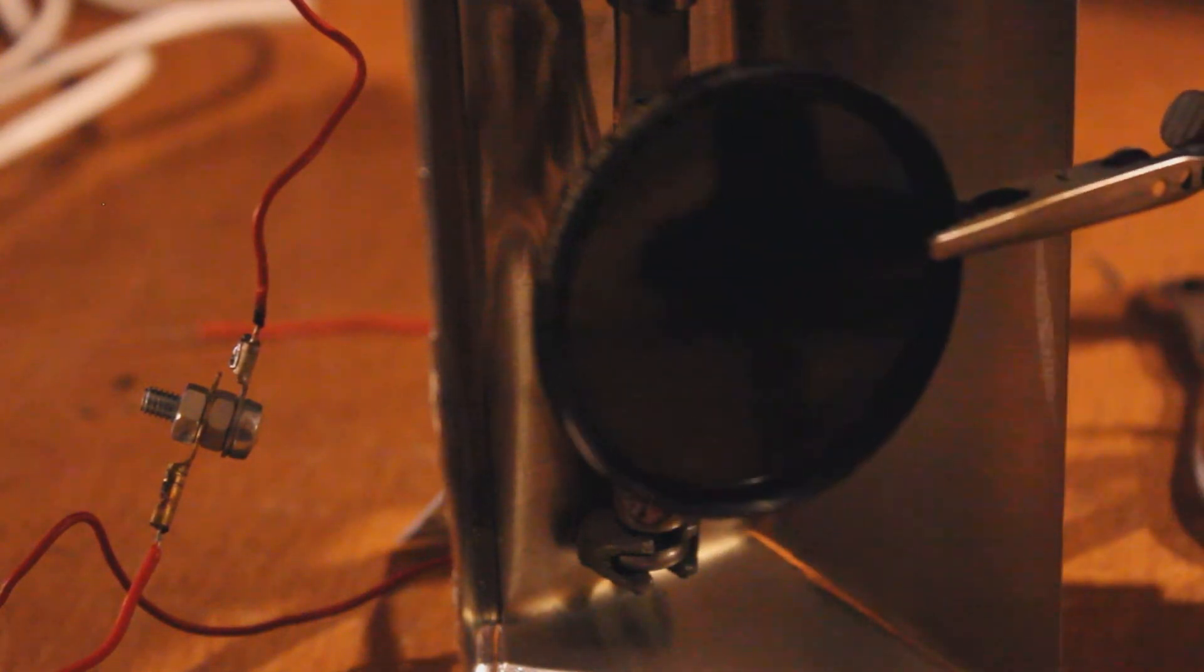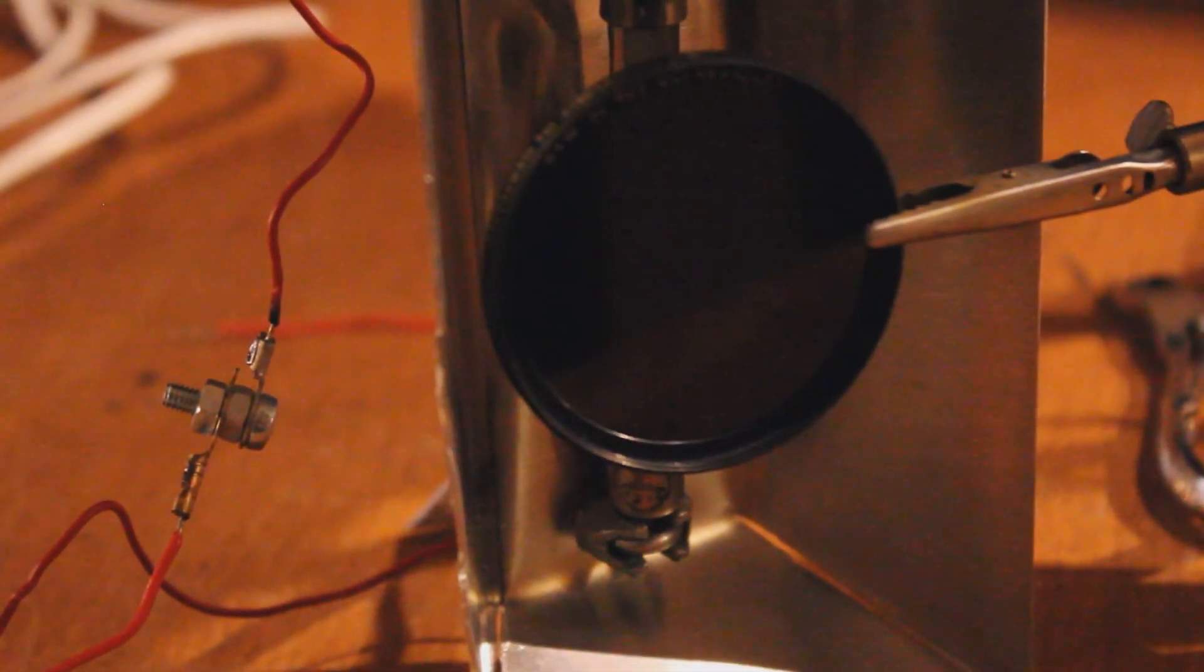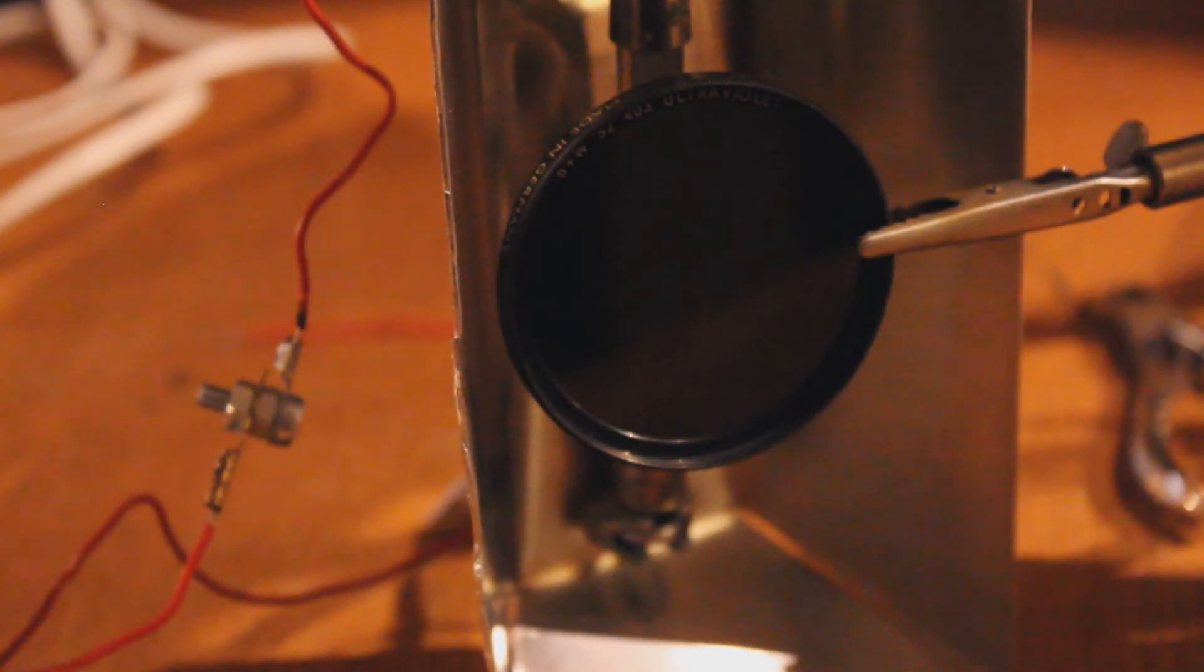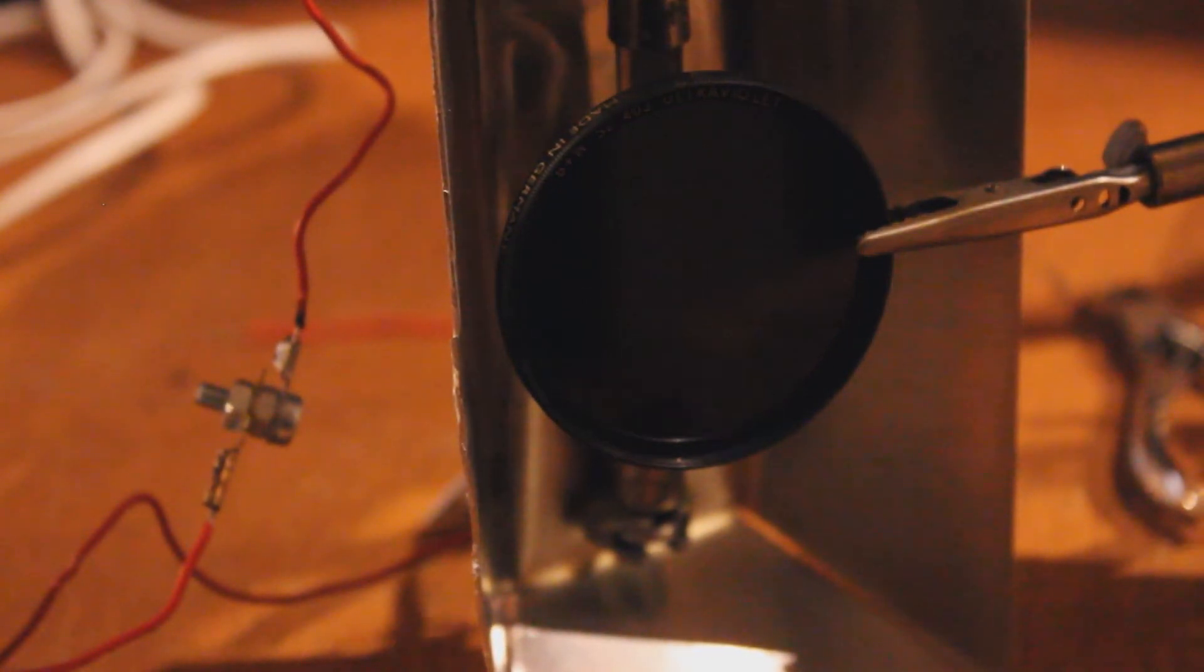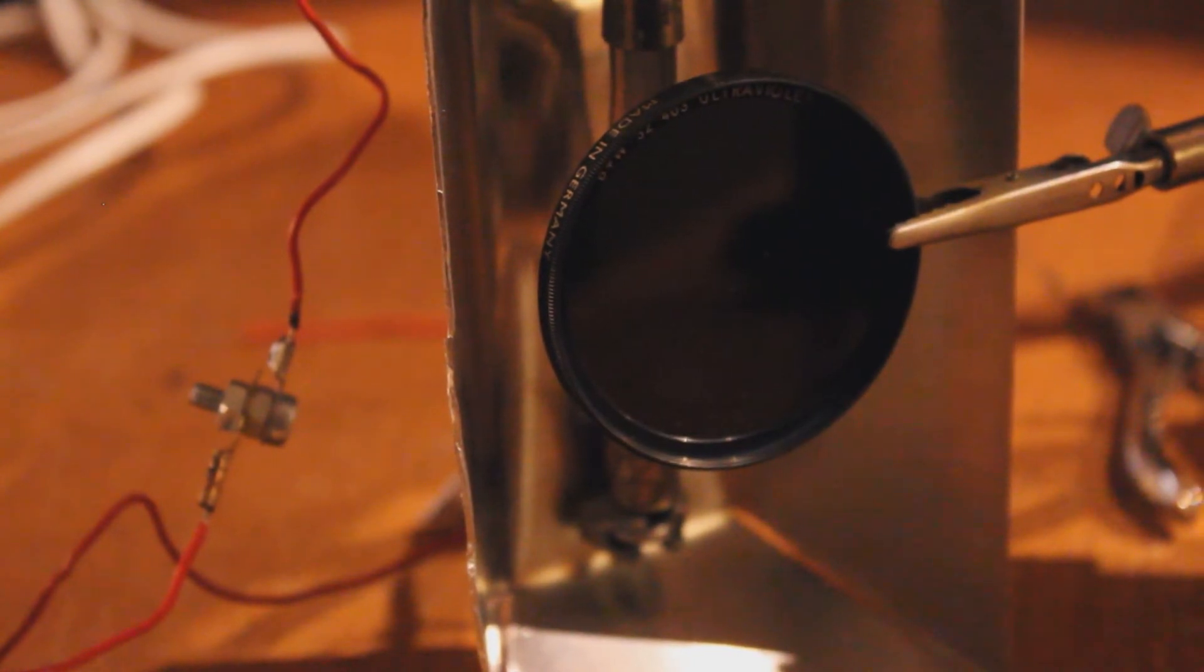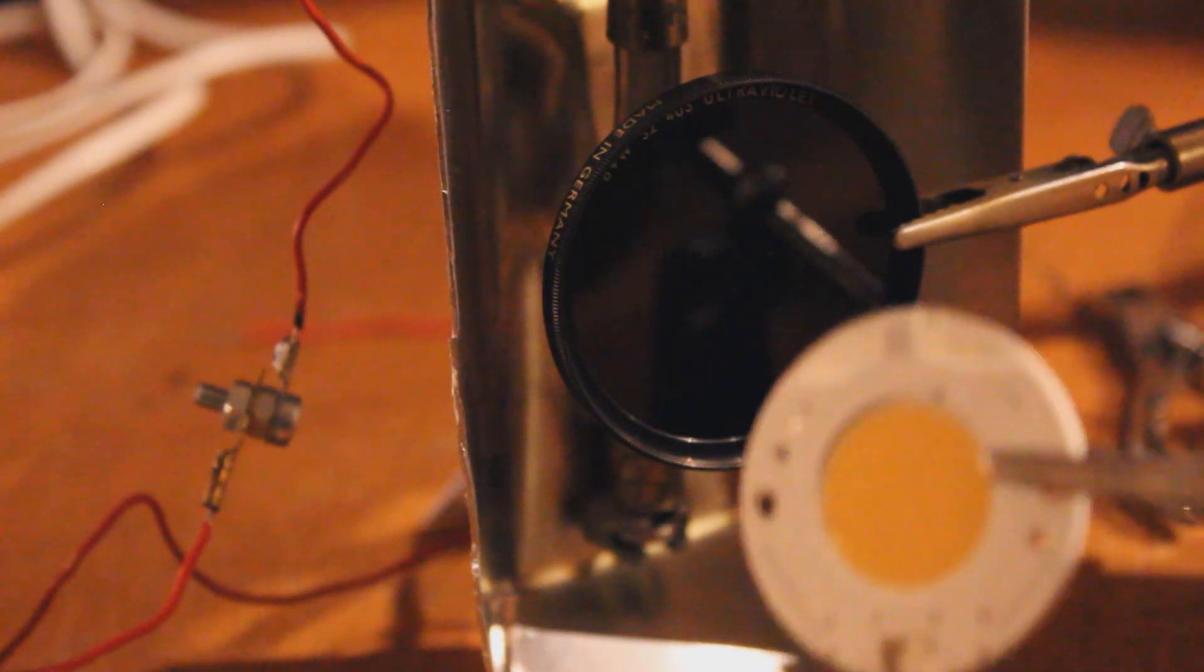Here is an ultraviolet pass filter. It's a piece of Wood's glass which will only allow the ultraviolet to get through. This will filter out all the bright light from the bulb, allowing us to see the phosphorescence of this little thing.